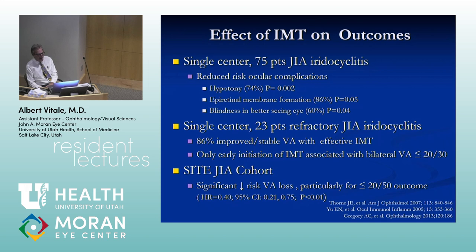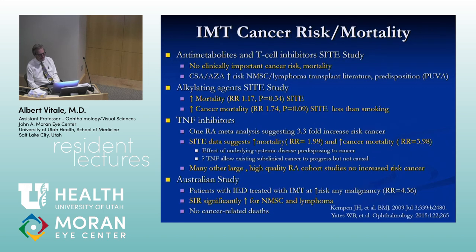Regarding outcomes: in JIA-associated uveitis, treating patients with immunomodulatory therapy decreases the risk of acute complications and blindness in the better-seeing eye. In the SITE cohort, there is a significant decrease in the risk of visual loss — worse than 20/50 outcome — in patients managed with IMT. Concerning cancer and mortality, the published literature shows no increased risk of cancer mortality or cancer risk in patients on anti-metabolites or calcineurin inhibitors.